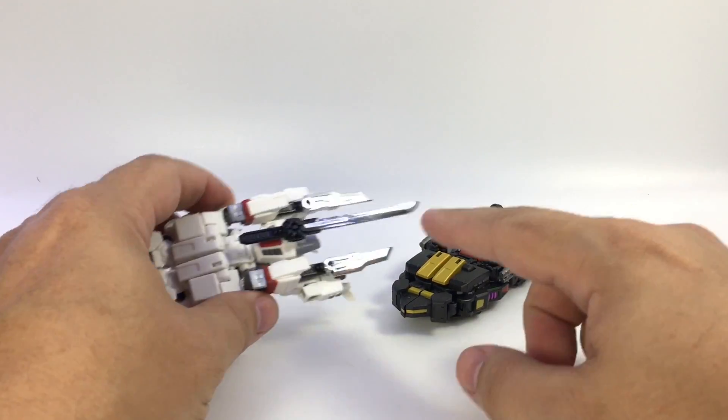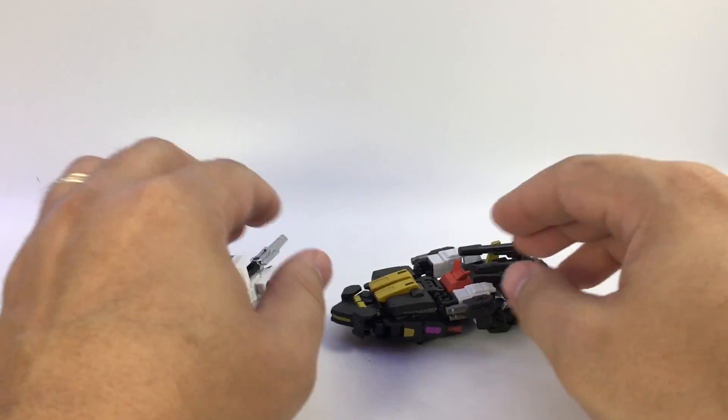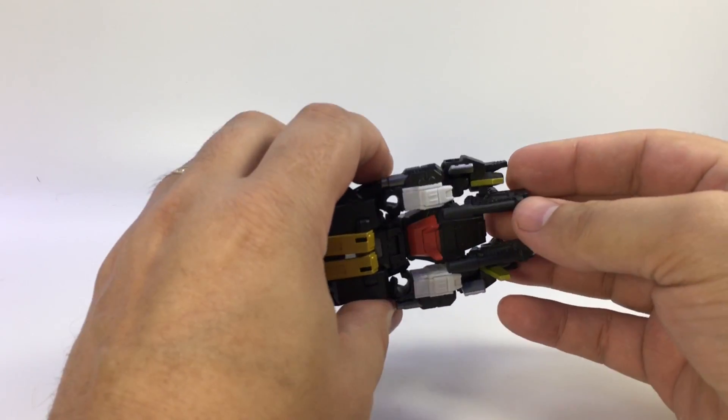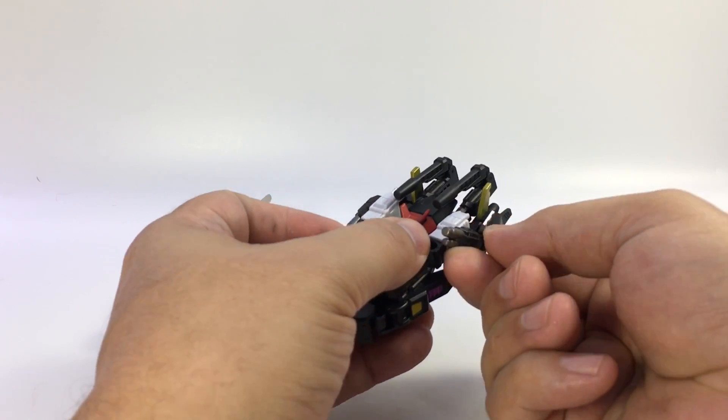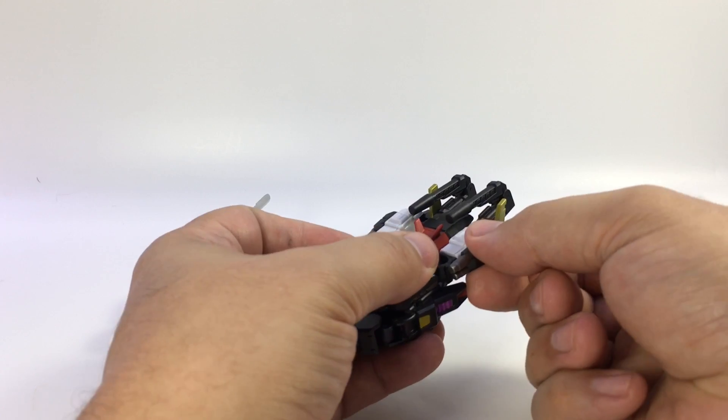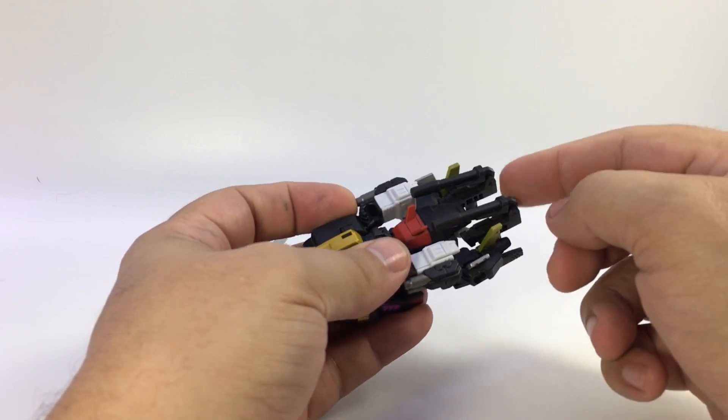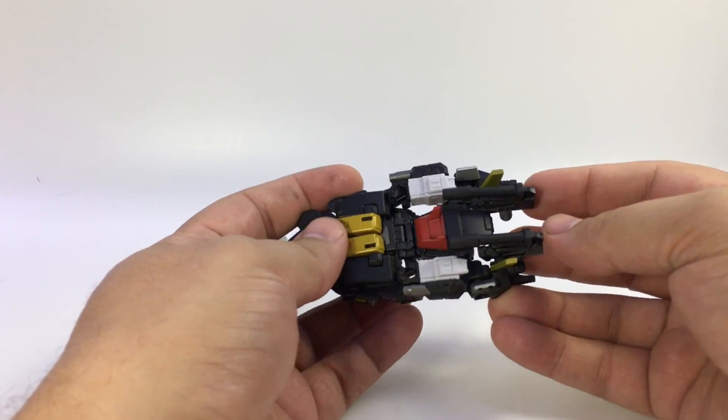Drift comes with, as you can see, the swords attached to vehicle mode. Deadlock, or Muramasa, has guns. He's got some little guns built into his arms, and they do rotate here on these little hinge pieces if you want to have them posed differently in vehicle mode. As well as a couple of long rifles here that peg into the pack.